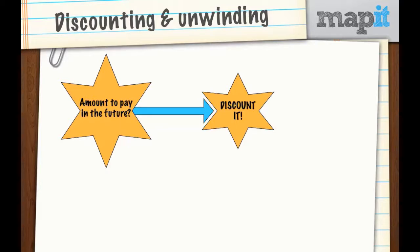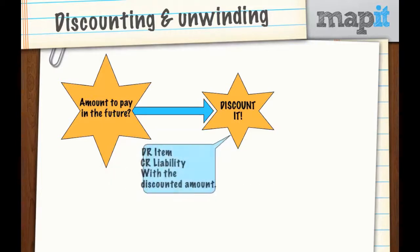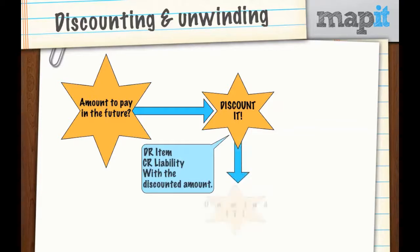Once you've worked out how much the discounting is, you can create your liability for the amount you're going to pay in the future. You debit the item — whatever it is — and you credit a liability, and you do it with the discounted amount. Now, that does cause a problem: you've now got a liability for a smaller amount than you're actually going to pay, because you're bringing it in at the discounted amount. So what do we do? We unwind the discount.